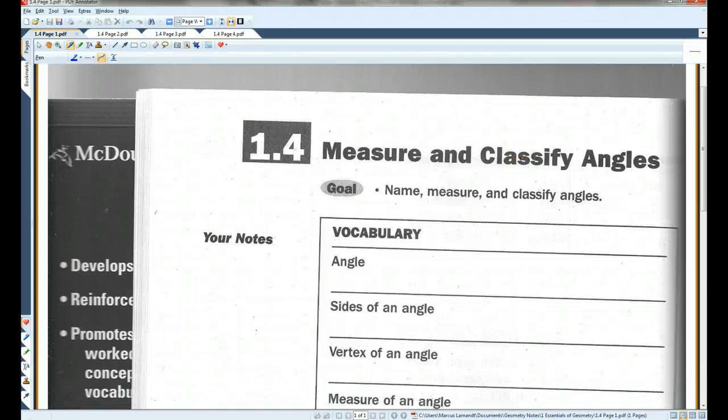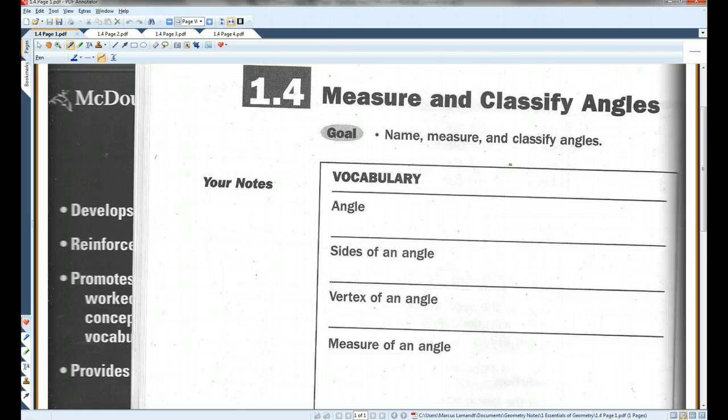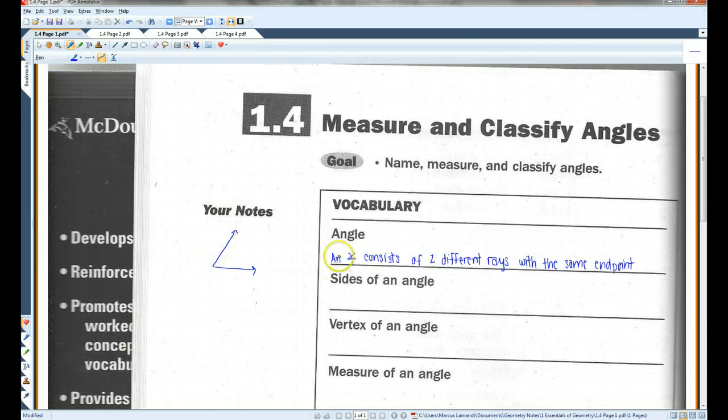Alright, if you guys could please turn to the page in your notes that looks like this, 1.4 Measure and Classify Angles. Alright, an angle, I think most of you guys already kind of know what an angle is. An angle looks something like this. There's two different rays that share an end point. I'd like to draw your attention to this symbol that I drew here. This means angle. This is my shorthand for angles. Anytime I draw something that looks like this, think angle.